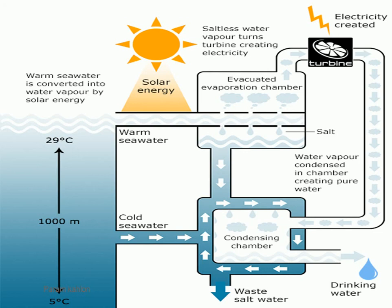The water is warmed, and after evaporation electricity is generated. The water then enters the condensing chamber, and the remaining water returns to the sea. This process is repeated again and again.